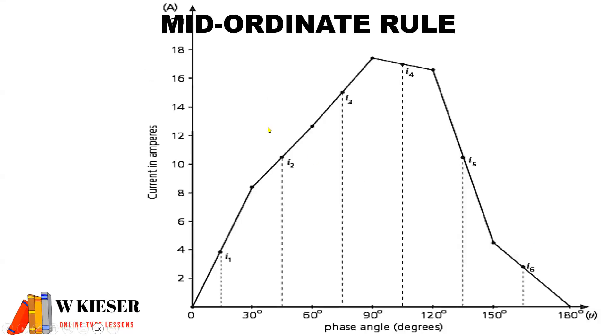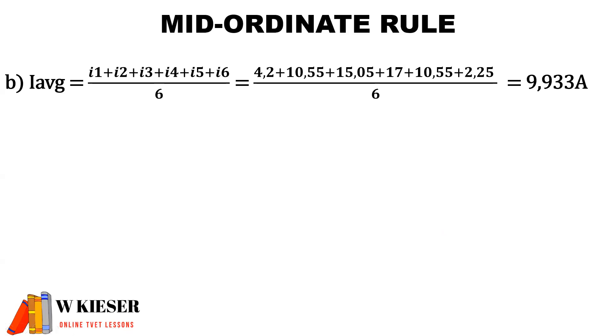Now this method is much easier than plotting the entire horizontal and vertical axis. You can see we have the phase angle on the horizontal axis and the current in amperes on the vertical axis. If you had to plot the table, your sine wave would have this shape, and we have our mid-ordinate values now so we can go ahead and calculate the average value.